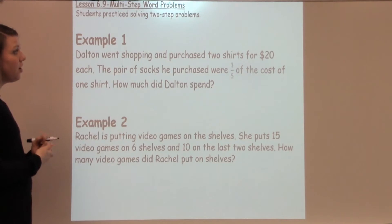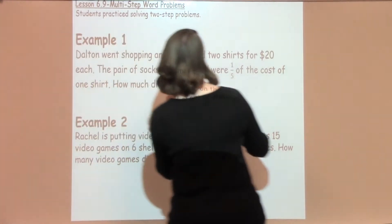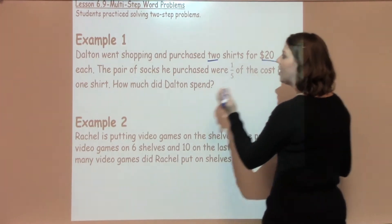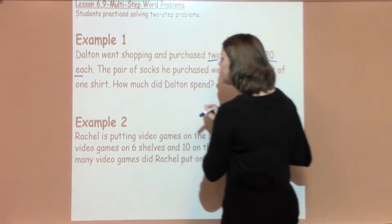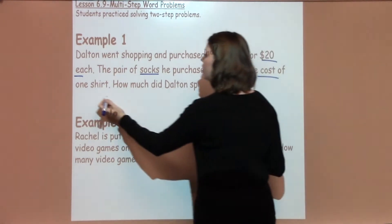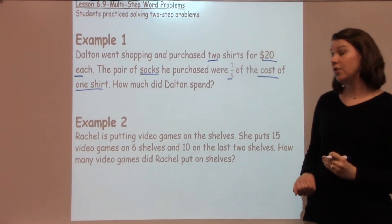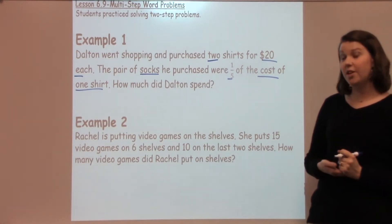As I was reading this problem, I heard a couple of important pieces of information. I know that Dalton bought two shirts for $20 each. The socks that he purchased were one-fifth the cost of the shirt, which tells me immediately that I don't know the price of the socks yet, so I'm going to need to figure that out.